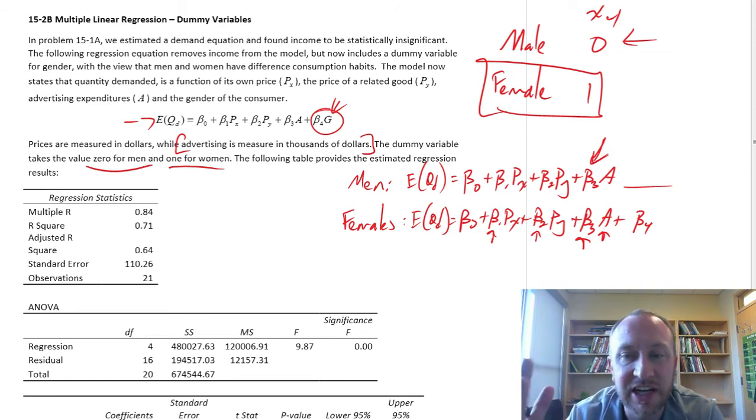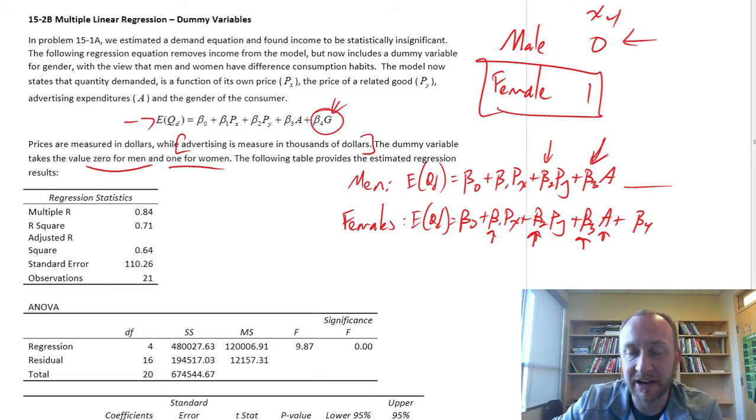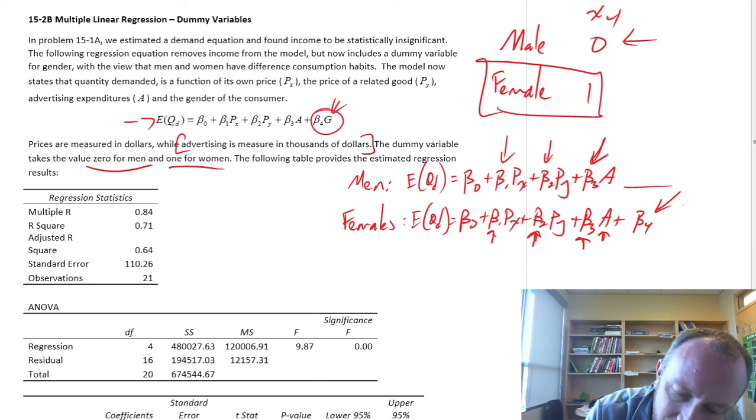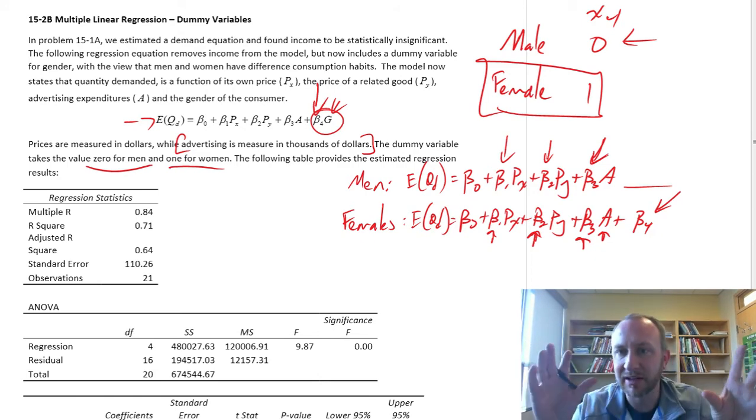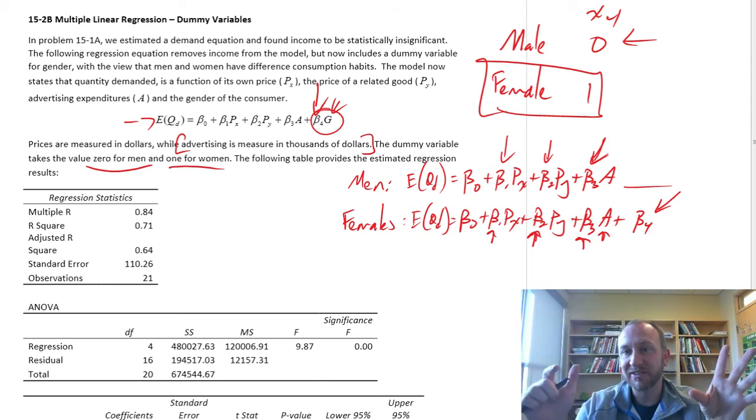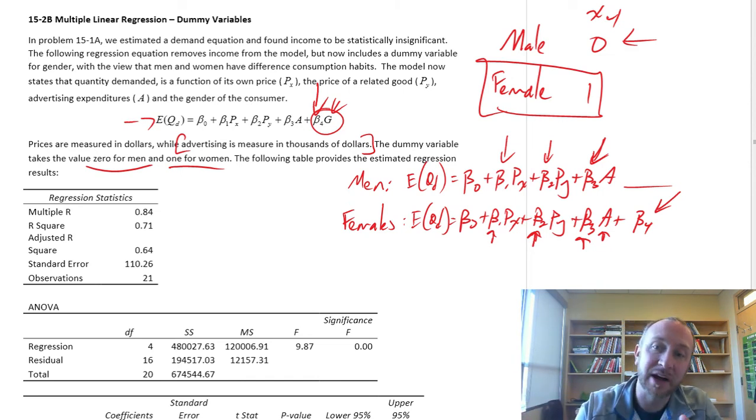The impact of a change in the price of a related good for both men and women, beta 2 tells us the marginal effect on quantity demanded. The impact of a change in its own price, beta 1, that's the same for men and women. This beta 4 tells us, given any other values for all of these independent variables, what's the average difference in quantity demanded between men and women. Beta 4 is acting on the y-intercept, it's not a slope.